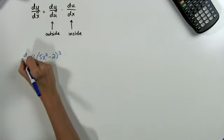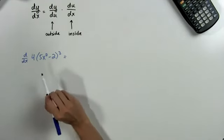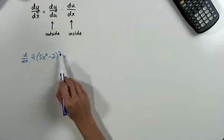So let's try to find the derivative of this. Remember, all we're doing is we're going to take the derivative of the outside function and multiply it by the derivative of the inside function.